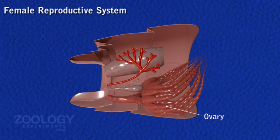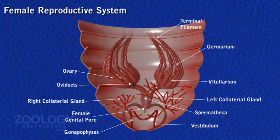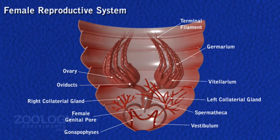Each ovary consists of eight elongated, tapering, and beaded blind tubes called ovary tubules. Each tubule contains a series of ova in various stages of development. Each tubule consists of an anterior region or germarium containing immature ova in early stages of egg formation, and a posterior region or vitellarium containing maturing eggs. The anterior tapering apical ends or terminal filaments of the ovary tubules of each ovary unite to form a single thread or suspensory ligament.